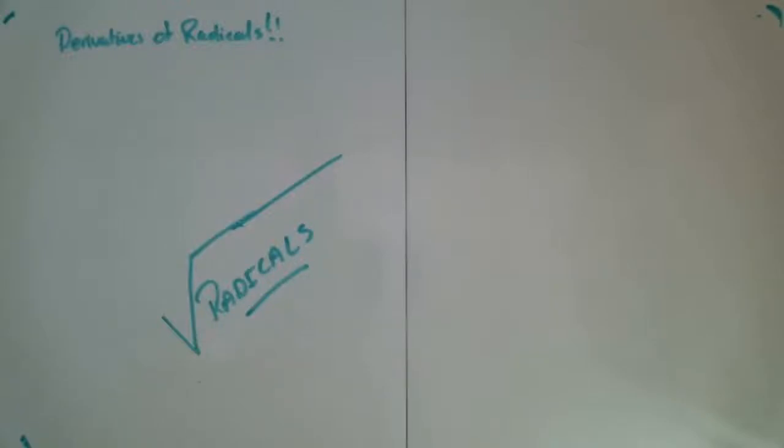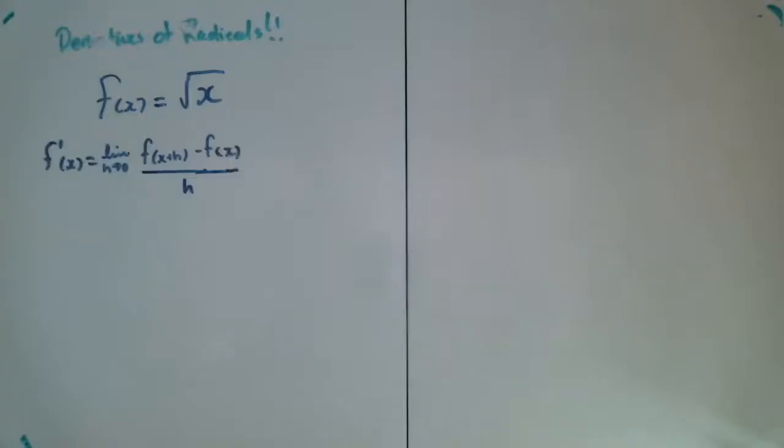We're going to be taking the derivative of radical expressions, and so we're going to start with our simplest radical expression where the function of x is equal to taking the square root of x. All we really have to do is use our difference quotient and take that h down to zero again.